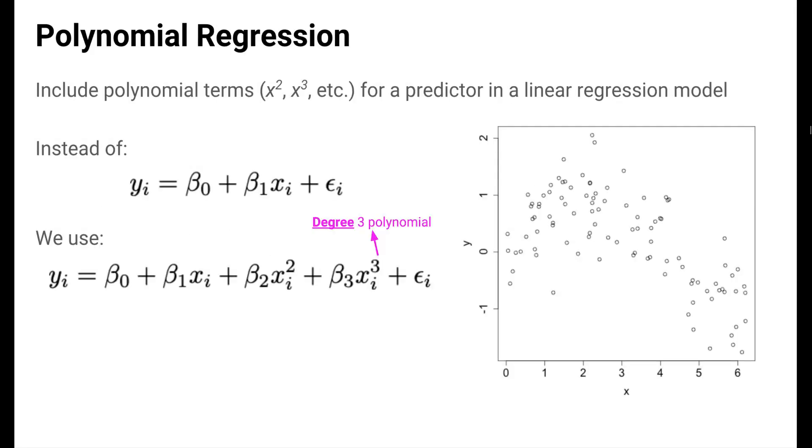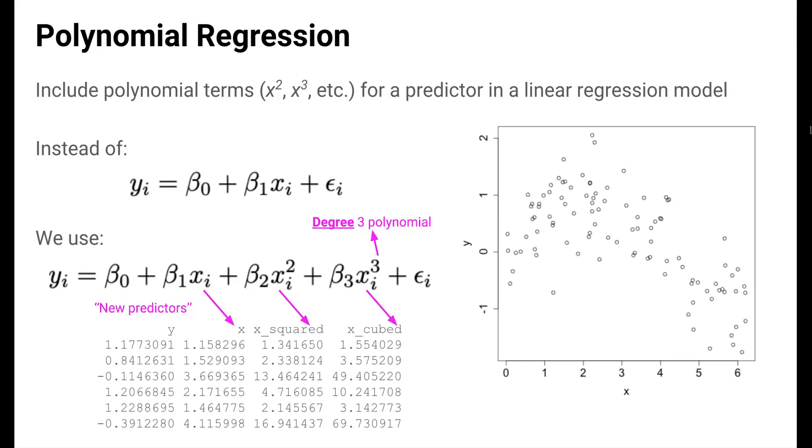One technique that fits exactly into the linear regression framework is polynomial regression. In polynomial regression, we use polynomial terms for a predictor in a linear regression model. An example is shown here. Instead of a line model given at the top, we use the model at the bottom where x is represented by a degree 3 polynomial. Computationally, this means adding new predictors created by squaring and cubing the x predictor. These new predictors are then treated as regular variables in ordinary least squares linear regression.